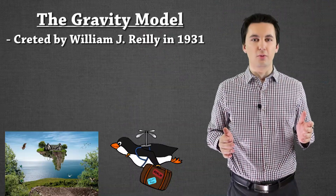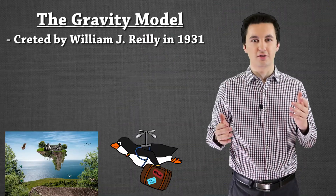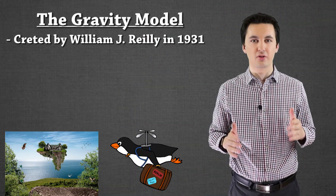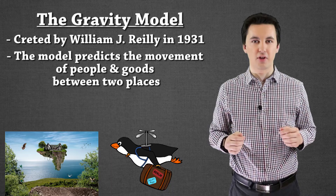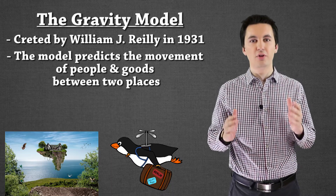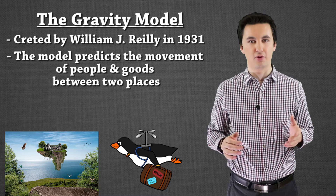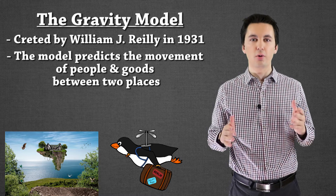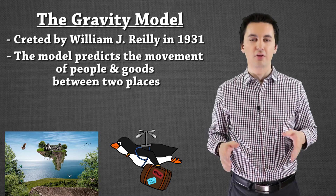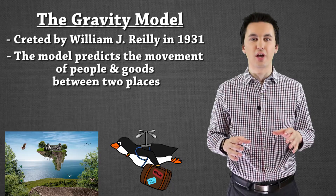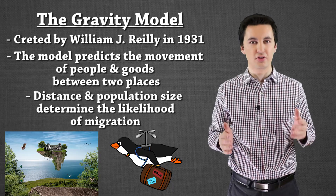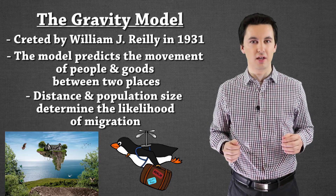The gravity model was created in 1931 and it tried to better predict the interactions that would happen between different cities. It is based on Newton's gravity model, so it's pretty similar in a couple of different areas. This model looks at distance and also at the size of cities.